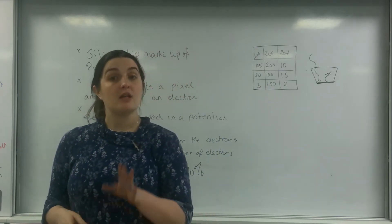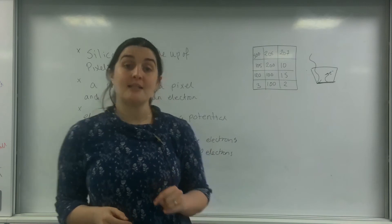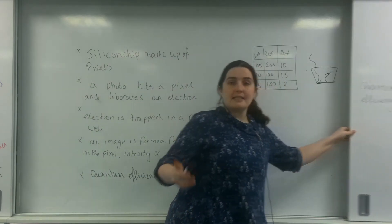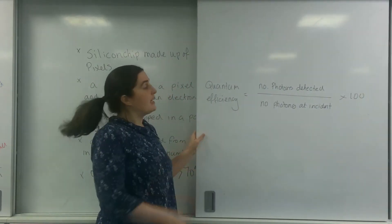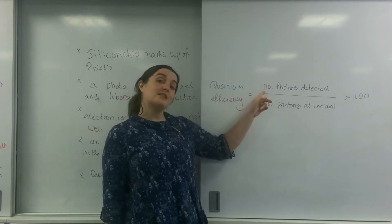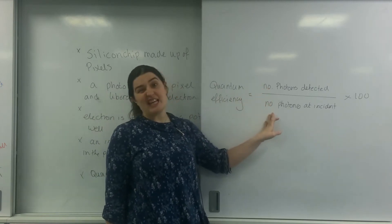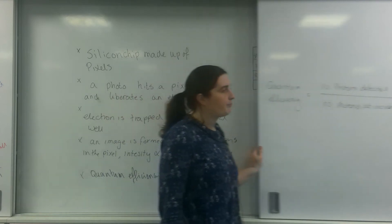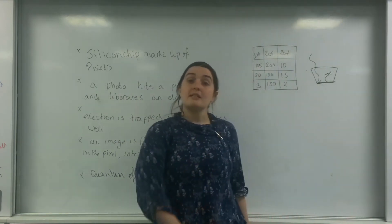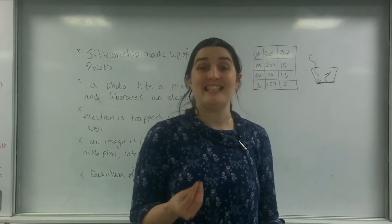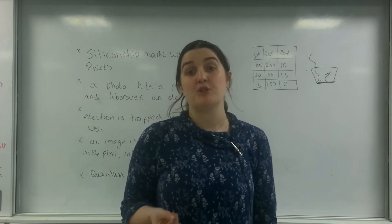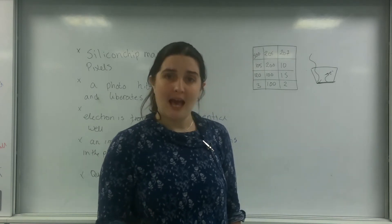So in an exam you may be asked about what quantum efficiency is, and all you really need to understand is the equation: quantum efficiency is the number of photons that have been detected by the object divided by the number of photons that actually hit it, times 100. And what you need to understand is the principle of how a CCD works. It's basically the photoelectric effect, but with a couple of caveats.